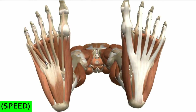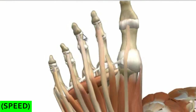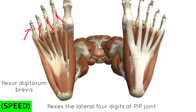Just like in the hand, you've got the flexor digitorum superficialis and flexor digitorum profundus. The flexor digitorum superficialis splits and inserts on the middle phalanges, allowing the deeper tendon - the flexor digitorum profundus - to pass through. It's exactly the same in the foot: the flexor digitorum brevis is analogous to the flexor digitorum superficialis. It splits and inserts on the sides of the middle phalanx, allowing the flexor digitorum longus to pass through. This muscle flexes the lateral four digits at the proximal interphalangeal joint.